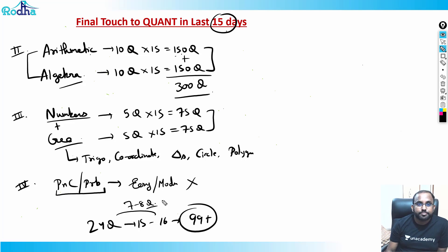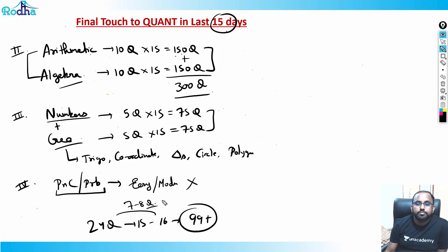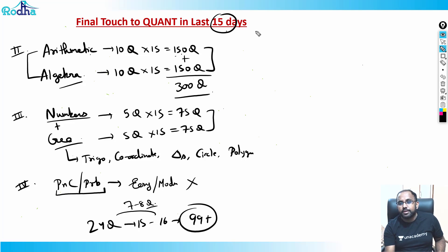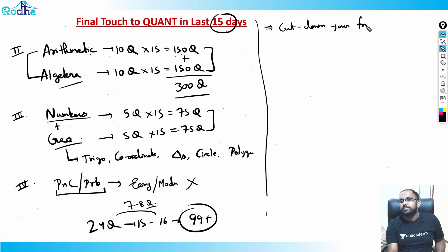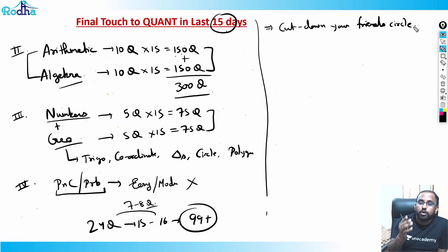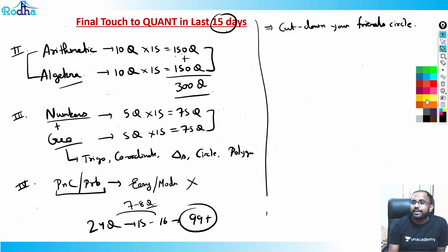So go with this approach, attempt the paper using the slot strategy, feel confident in the exam, and stay positive. In the last 15 days, cut down your social circle — very important. Remove friends who talk negatively. For these 15 days, limit contact with anyone not contributing positively to your preparation.